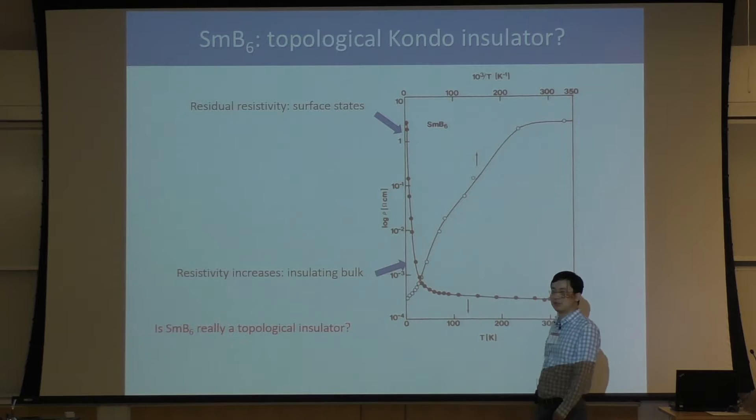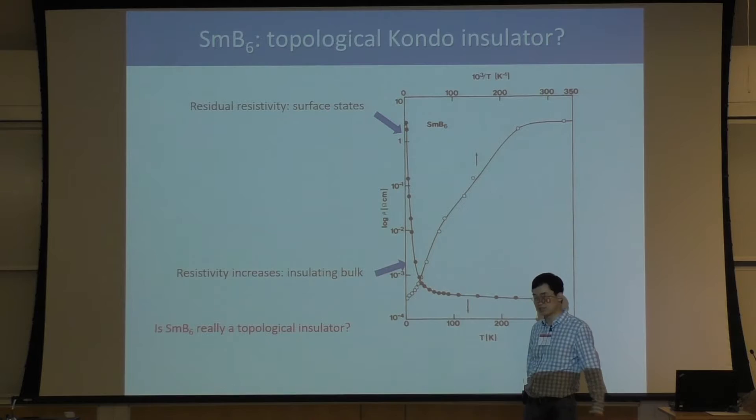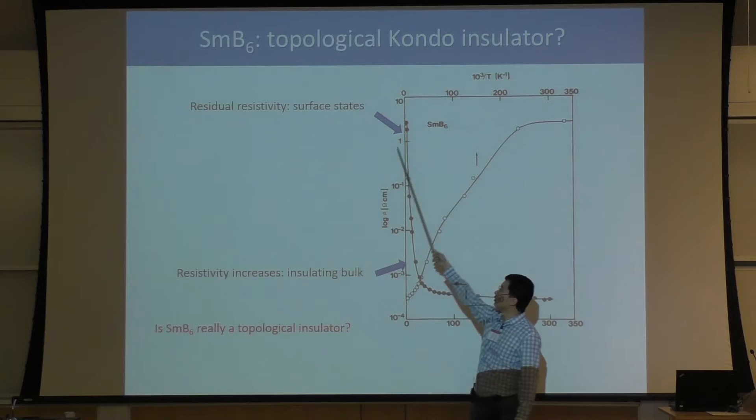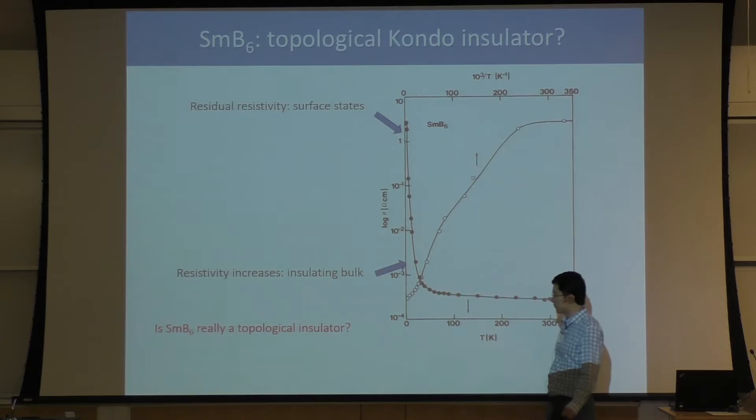If SMB6 is a topological insulator, then the transport puzzle can be explained very naturally. At high temperature, we have lots of thermal excitations in the bulk, so we see bulk dominant features — the bulk is an insulator. At low temperature, bulk carriers die, so we only see the surface — we see a surface metal.